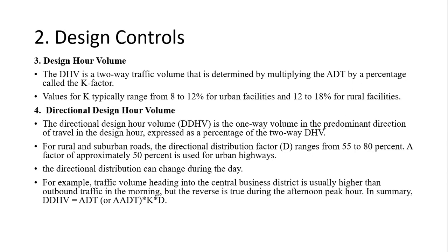Once we have the DHV, we can multiply by 0.55 to get the directional volume. We can also get DHV directly from ADT by multiplying by the K factor, which is 0.08 to 0.12, and the D factor of 0.55.